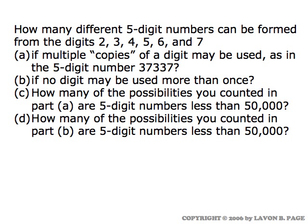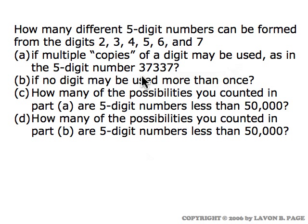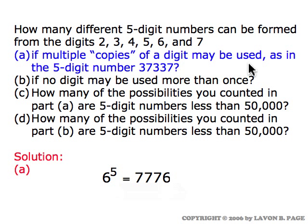How many different five-digit numbers can be formed from the digits two, three, four, five, six, and seven with various conditions? In part A, we're allowed to use multiple copies of a digit — for example, thirty-seven thousand three hundred and thirty-seven would be legal. For each of the five digits we have six possible choices, so that's six times six times six times six times six, or six to the fifth power possible five-digit numbers.